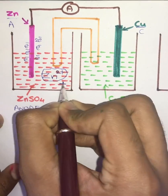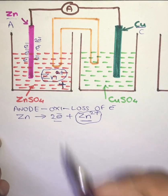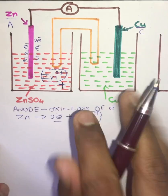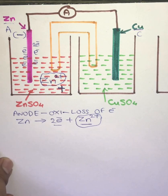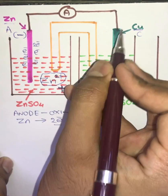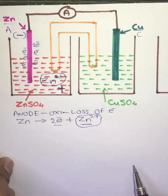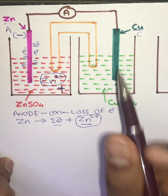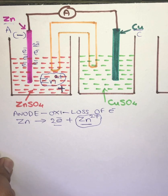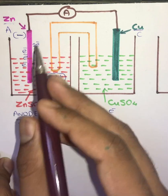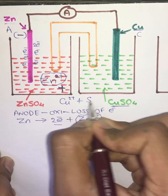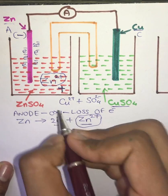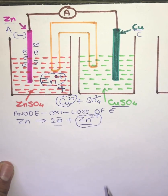The electrolytic solution has now become positively charged, and since there are many electrons on the Zn electrode acting as our anode, the anode becomes negatively charged. The electrons travel through the conductor and reach the copper cathode. Someone has to take those electrons — this CuSO4 will break down into Cu2+ ions plus SO4 2- ions.